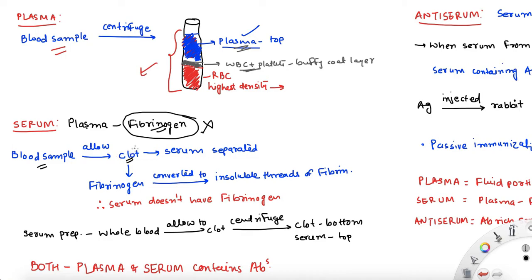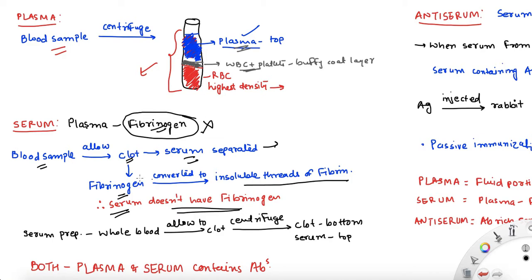Once the blood clots, what is clotting briefly? Clotting is when the fibrinogen present in the blood converts into insoluble threads of fibrin. So the fibrinogen forms a clot — it converts into insoluble fibrin threads. After clotting, you get a liquid separated from the clot — that's what serum is. Once the clot has formed, the liquid that is separated is serum. Since fibrinogen has been converted into insoluble fibrin, serum does not have fibrinogen. Serum is plasma but without fibrinogen.